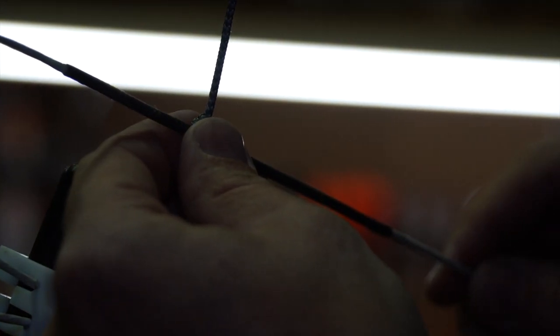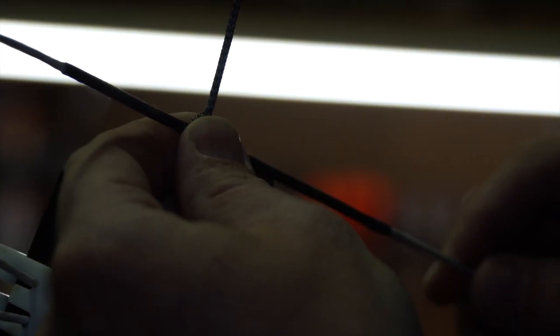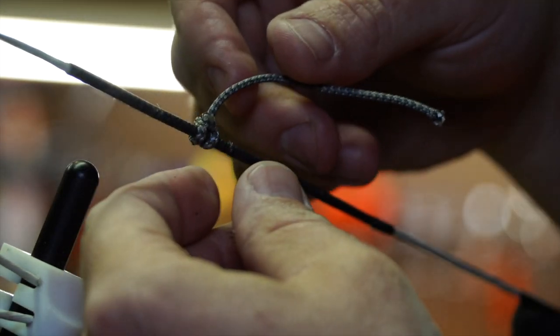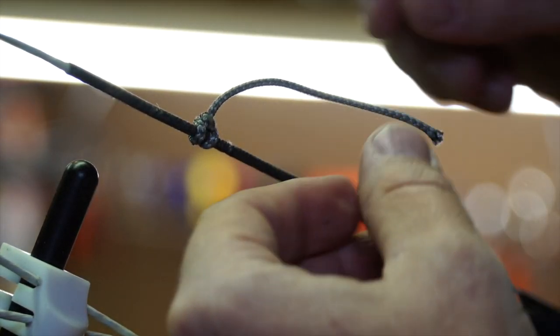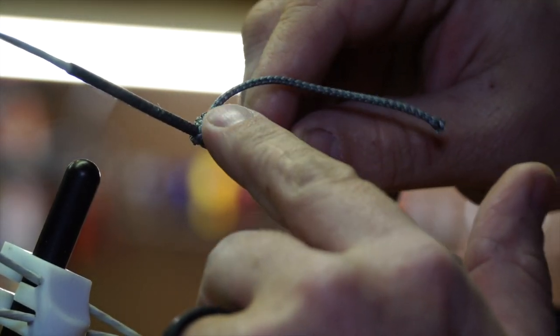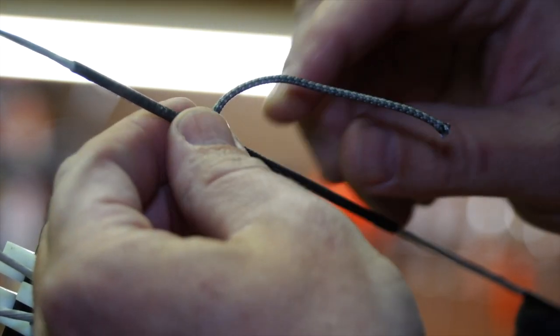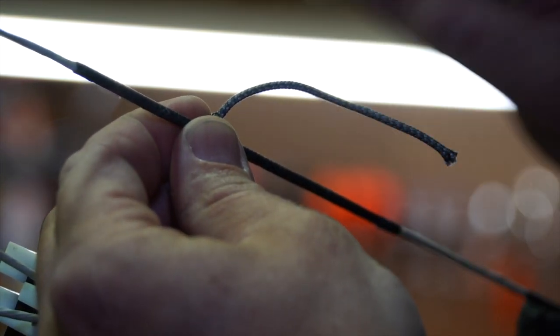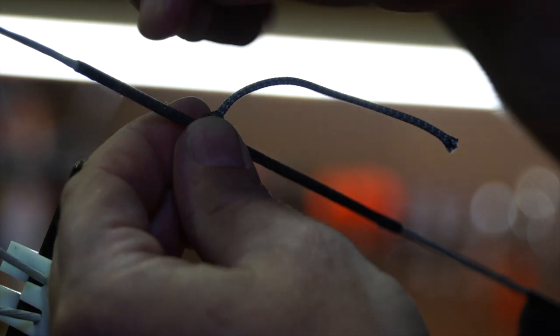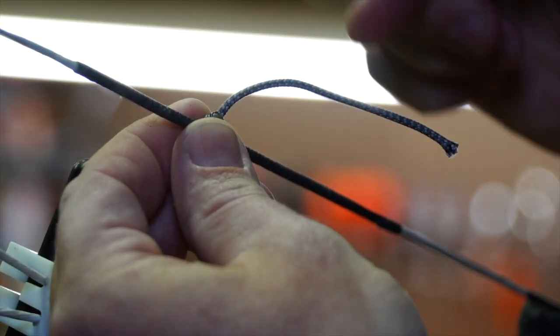I've got my d-loop locked down so it shouldn't move, so my arrow should always be level. Now I start completing the rest of my d-loop. Notice the burned end is again on this side of the string. We're going to put the other burned end on the opposite side of the string so that the d-loop is actually going to essentially cross over the string.